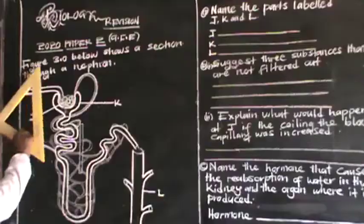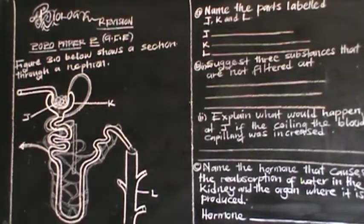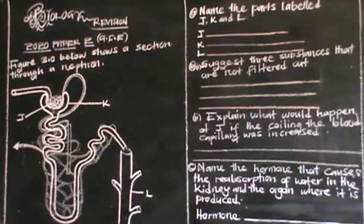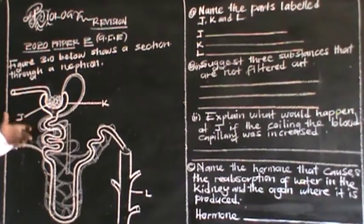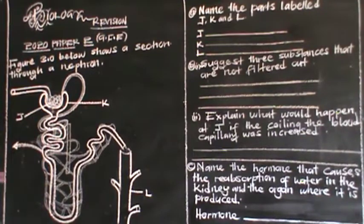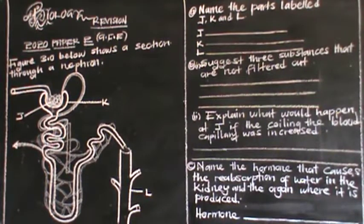Let us look at 2020 Paper 2. Figure 3.0 below shows a section through a nephron. So we've been given this diagram showing a nephron. An nephron is simply a functional unit of a kidney.